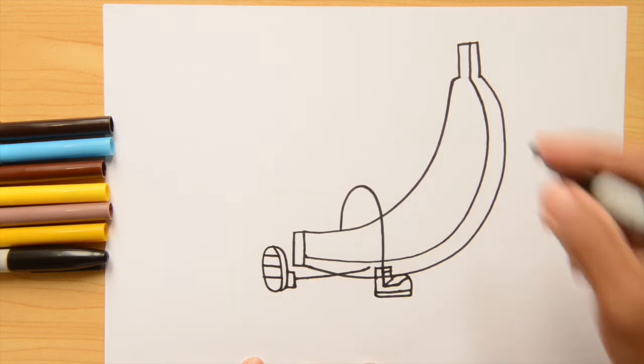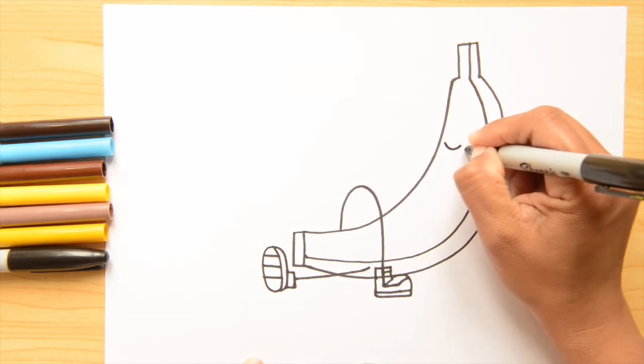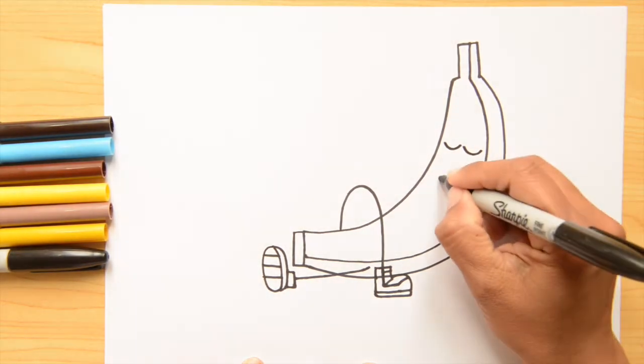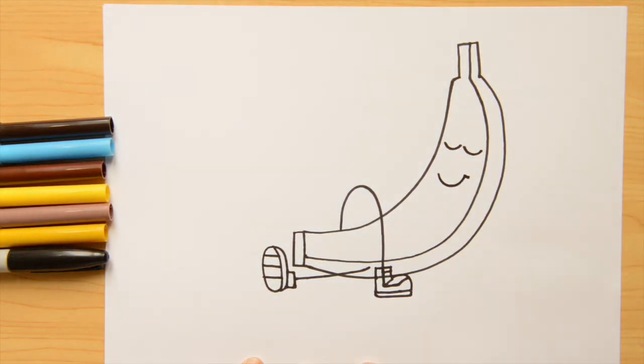Now let's continue with the face. So for the face I'm doing eyes closed and they look like a letter U, and same with the smile, just like a letter U, little smirk. And the next will be the arms.